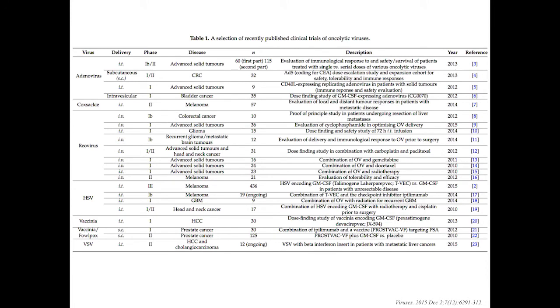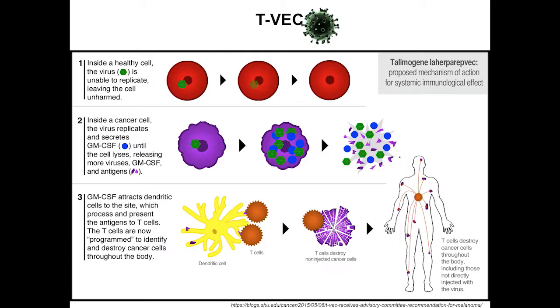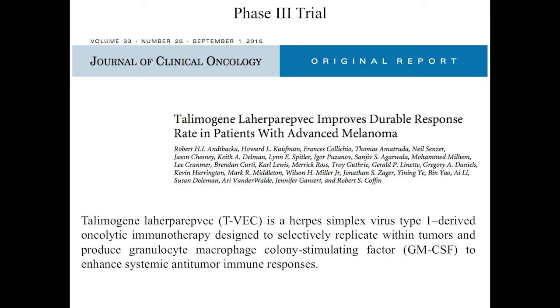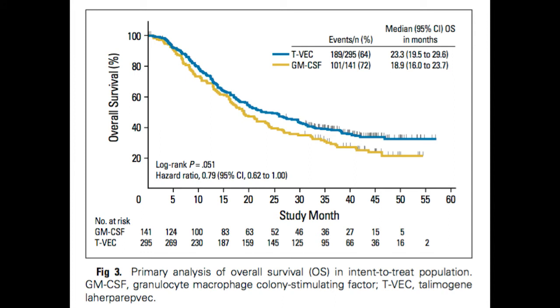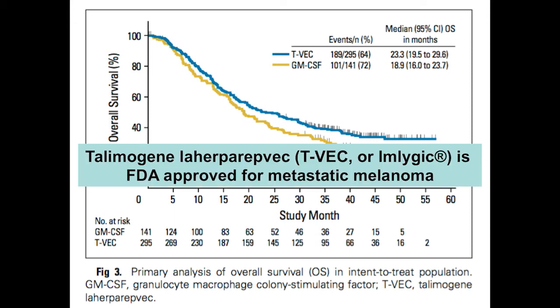There are many ongoing trials in solid cancers including melanoma, bladder cancer, colorectal cancer, and GBM. The phase three trial of T-VEC showed a modest but significant response rate in patients who received the virus compared to controls, leading to improved overall survival and FDA approval for treatment of metastatic melanoma.